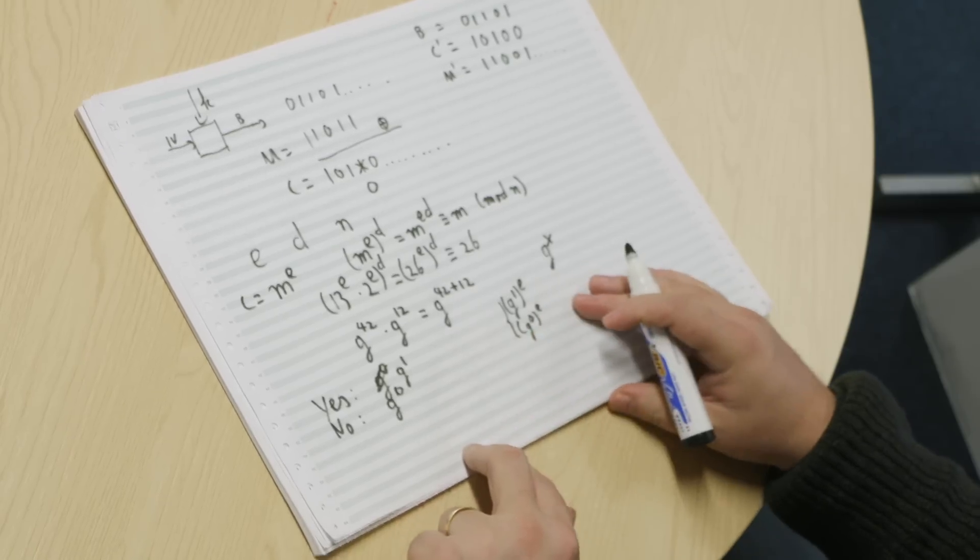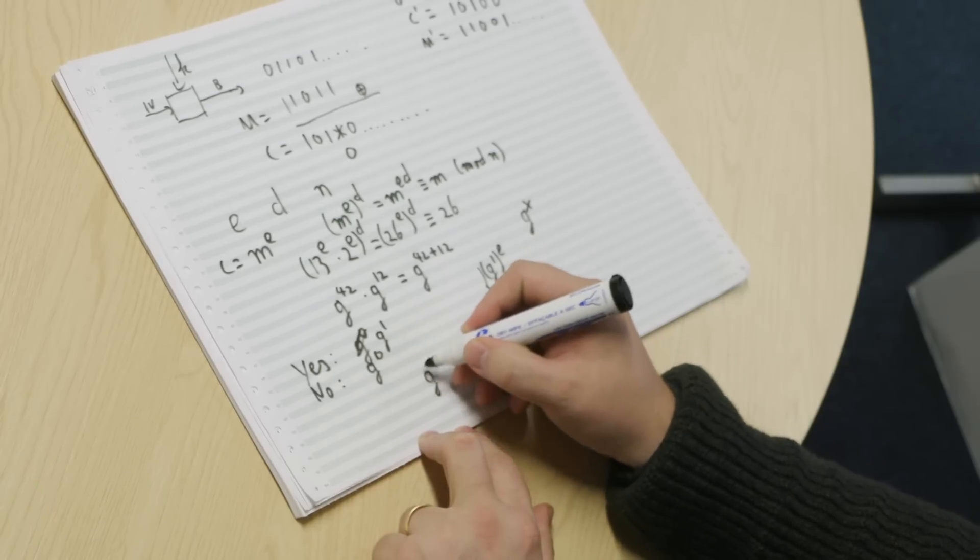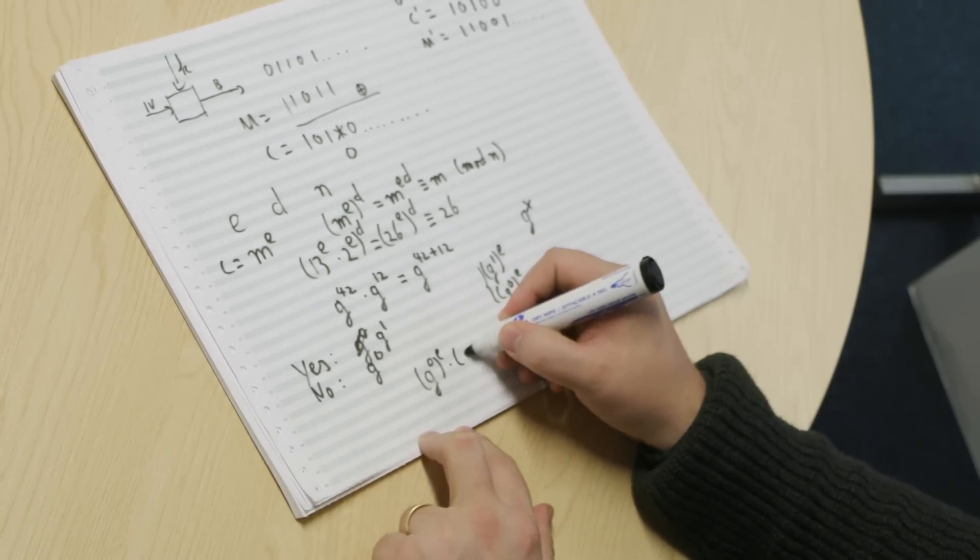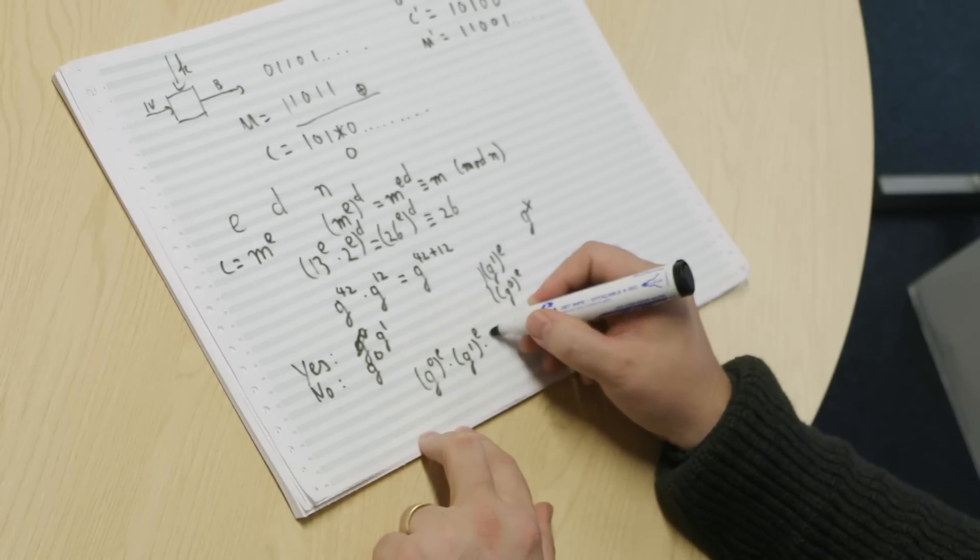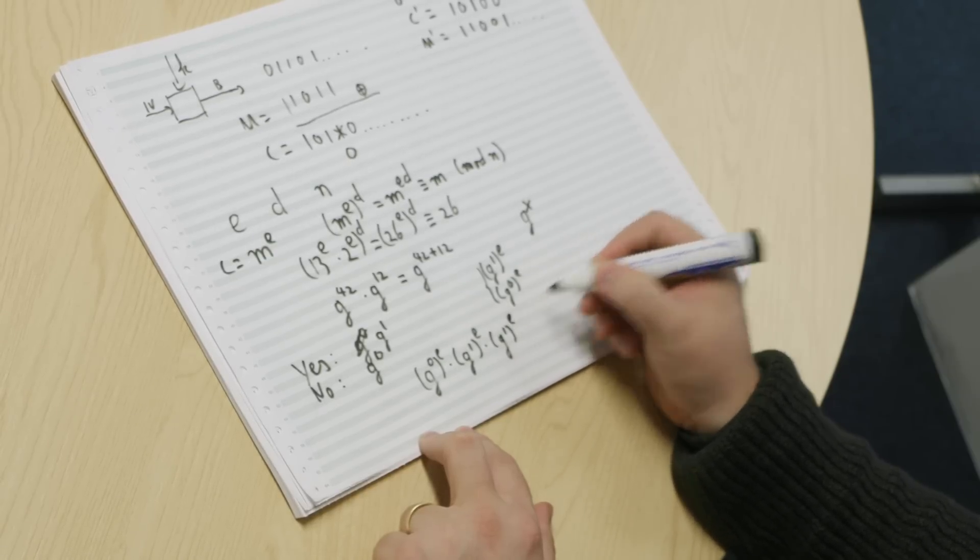What you can do is you can take all 100 votes and you multiply them with each other, right? So we get a big computation like this. G to the power 0 to the power E times G to the power 1 to the power E times, let's say another yes vote, G to the power 1 to the power E, etc.